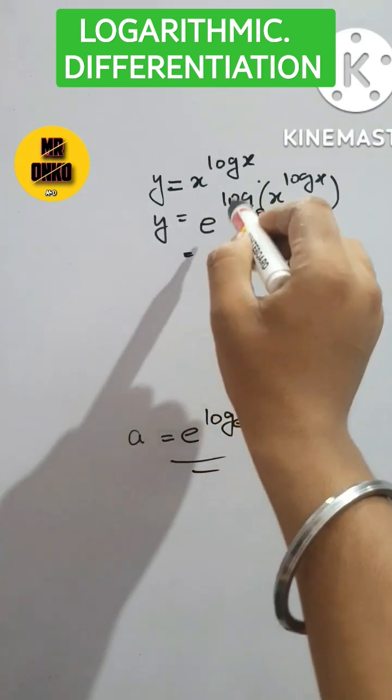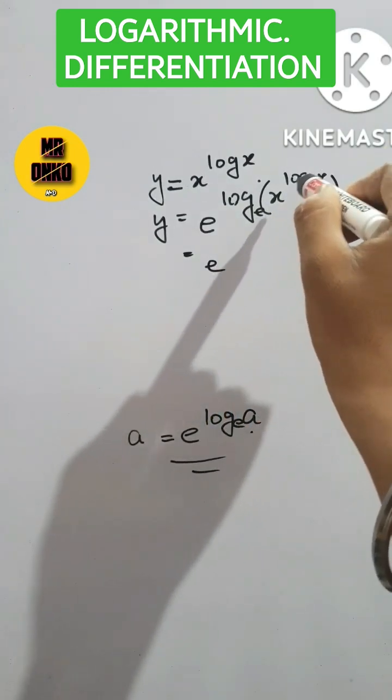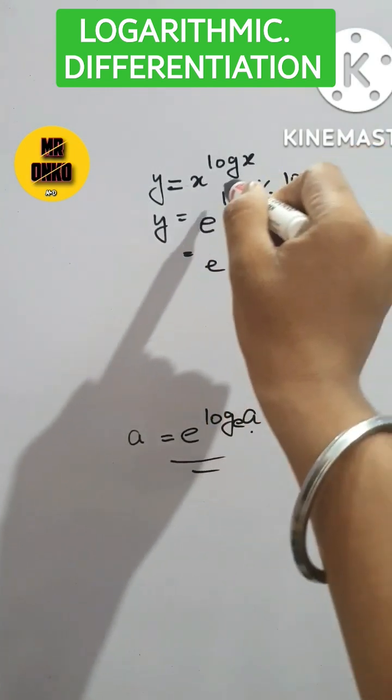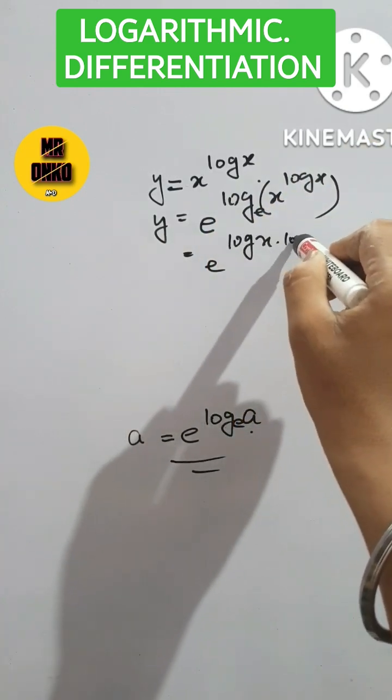Now we will apply logarithmic property that is e to the power log x is in the power of this argument, so it will be in the front side. So it will be e to the power log x into log x.